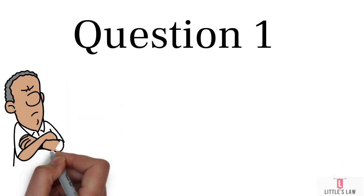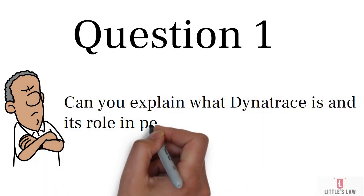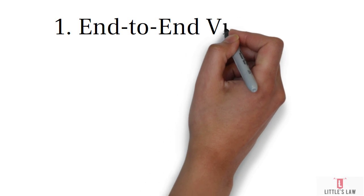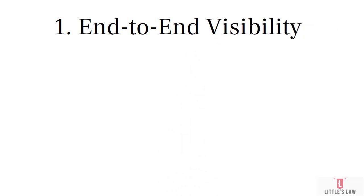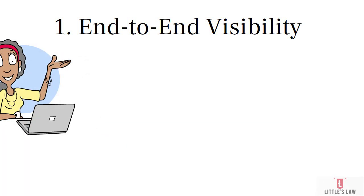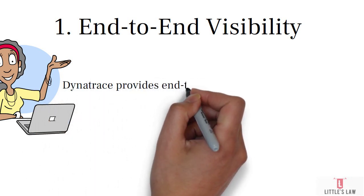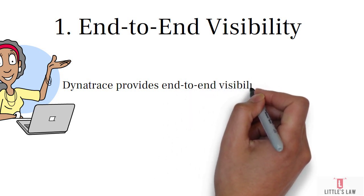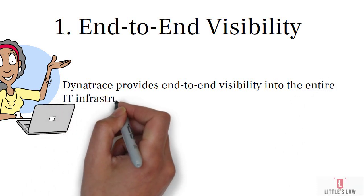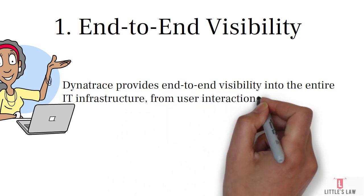So the question here is: can you explain what Dynatrace is and its role in performance monitoring? We will see it one by one, and I will take you through examples as well. Dynatrace is a comprehensive performance monitoring tool which is used in IT environments to ensure optimal system performance and user experience. Its role in performance monitoring is multifaceted — we can use it in several phases and scenarios when it comes to performance testing.